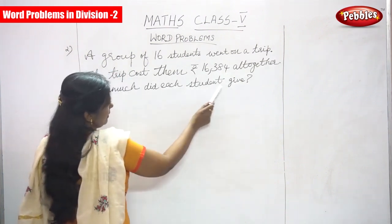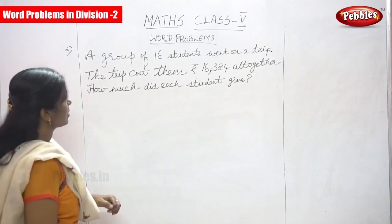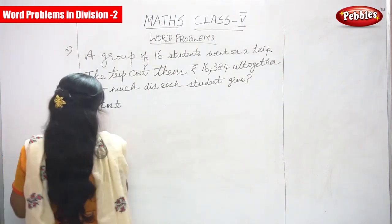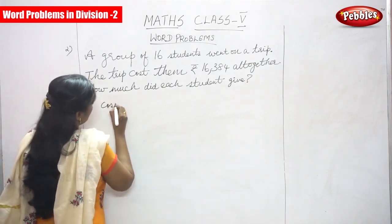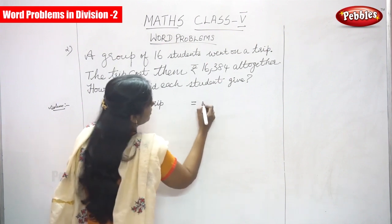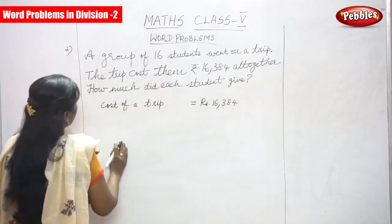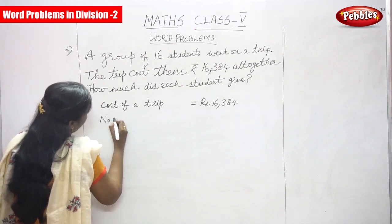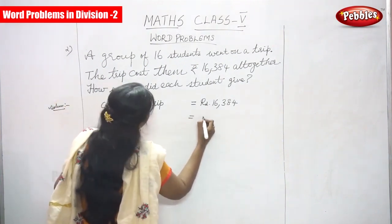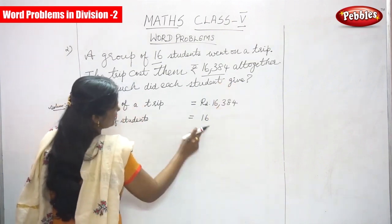We will go for the solution. Cost of a trip — that is Rs. 16,384. Number of students — that is 16.